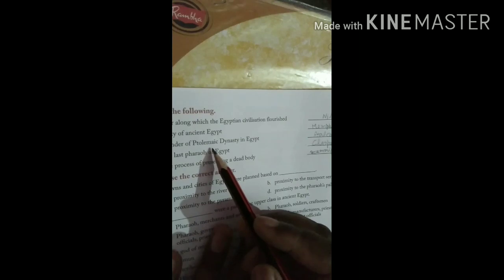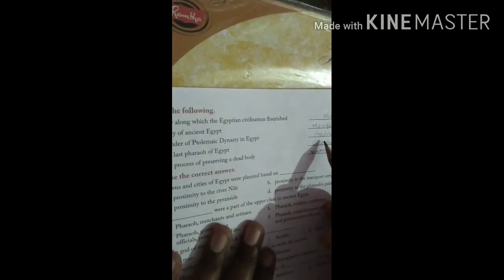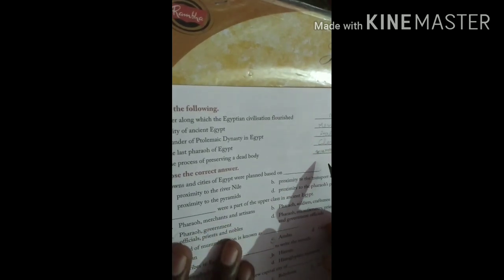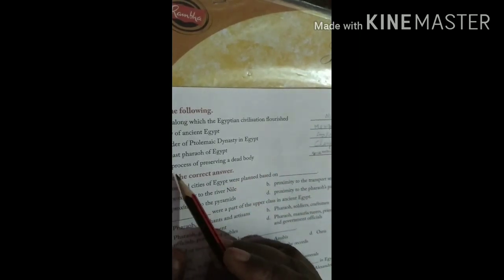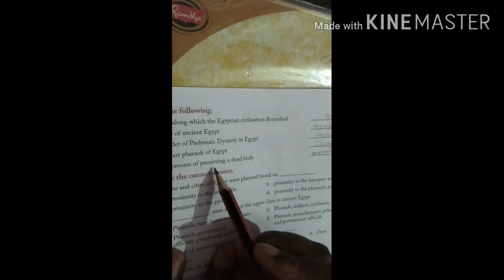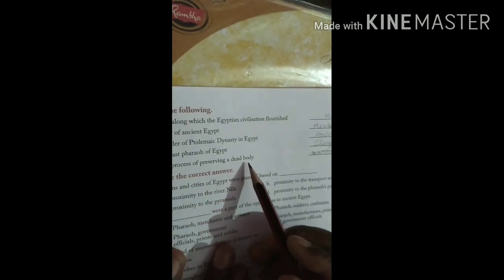The city of ancient Egypt, that is Memphis (M-E-M-P-H-I-S). Founder of Ptolemic Dynasty in Egypt: Ptolemy (P-T-O-L-E-M-Y). The last Pharaoh of Egypt: Cleopatra (C-L-E-O-P-A-T-R-A). The process of preserving a dead body: that will be mummification.